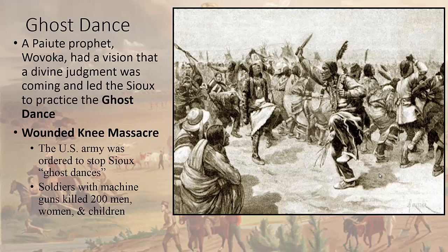The Battle of Wounded Knee happens in the 1880s and started similarly to Tecumseh's movement. The ghost dance is a Native American cultural revival by the Sioux, started by a prophet named Wovoca, who had a vision that divine judgment was coming and wanted to get rid of Western European influences, including guns and trade with Americans. A group of Native Americans doing this ghost dance were ordered stopped by the U.S. Army, who then gunned them down — men, women, and children. 200 people are killed, and that becomes the Wounded Knee Massacre.